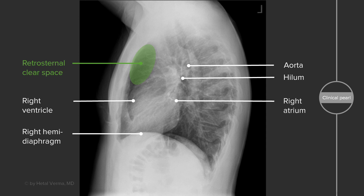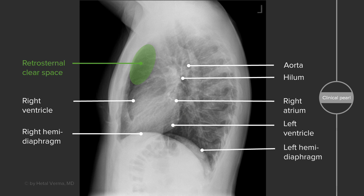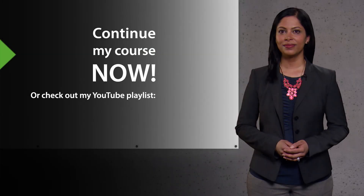Here you can see a portion of the right atrium forming the posterior heart border. The superior aspect of the posterior heart border is the right atrium, while the inferior aspect of the posterior heart border is the left ventricle. And posteriorly here, slightly lower than the right hemidiaphragm, is the shadow of the left hemidiaphragm.